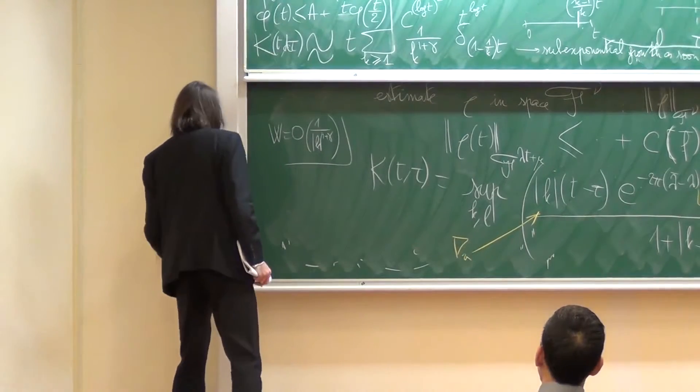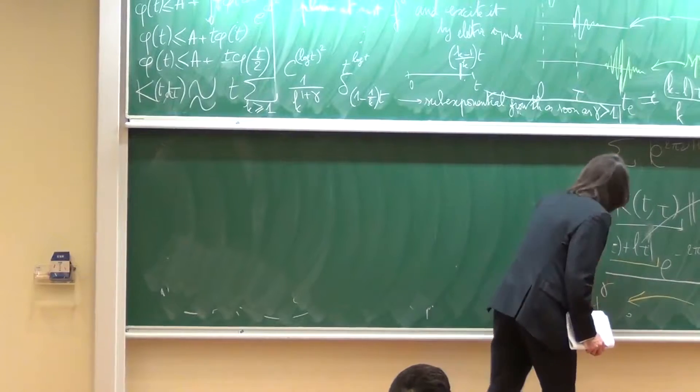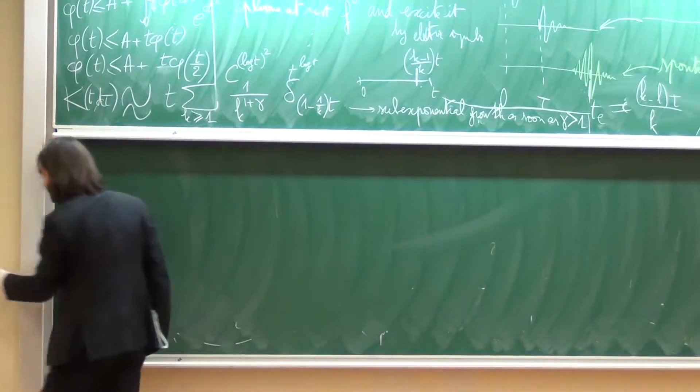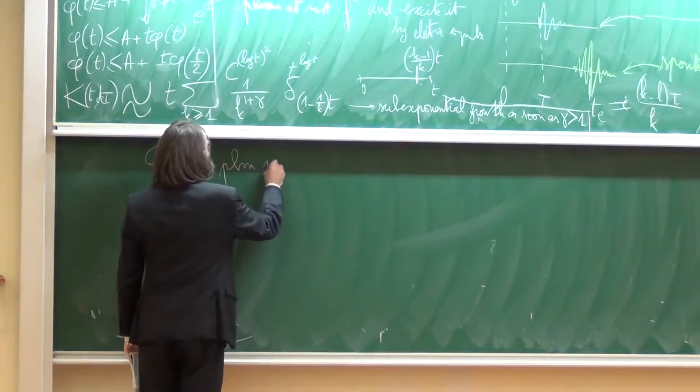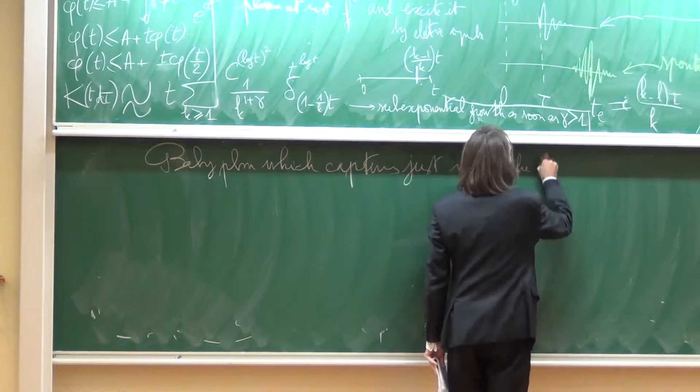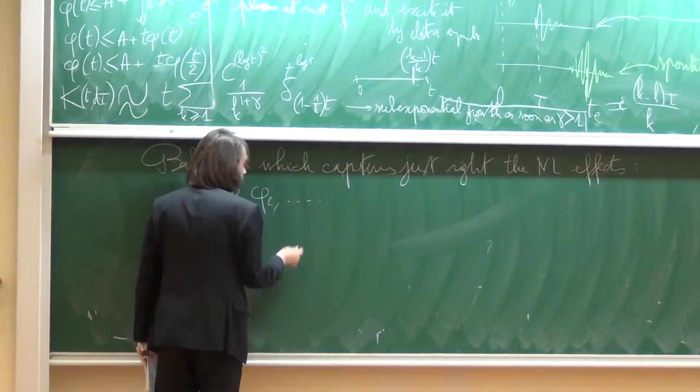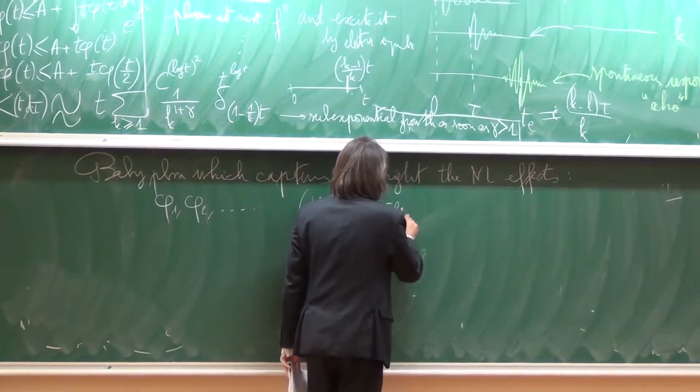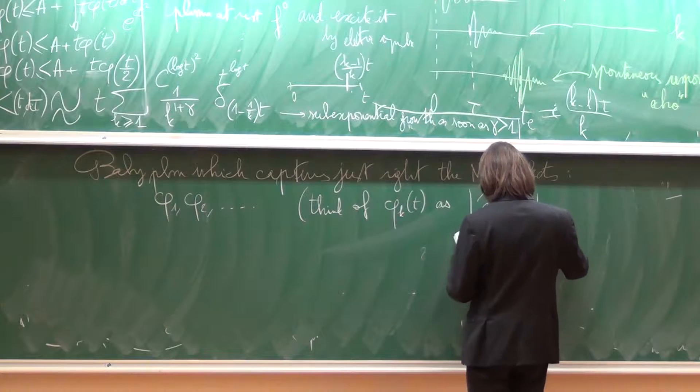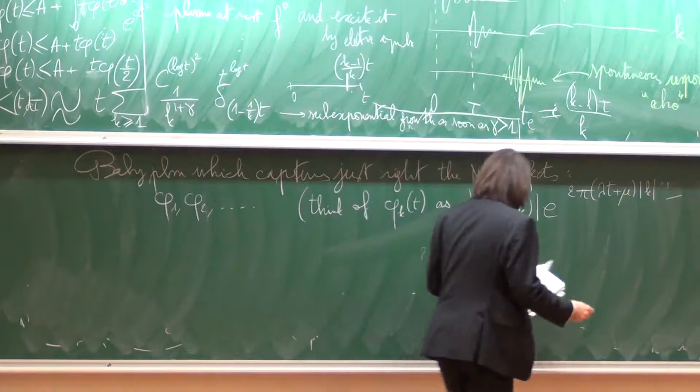And here is the baby problem that gives the right behavior. So baby problem, which captures just like the nonlinear effects. The baby problem would be that I estimate phi 1, phi 2, et cetera. Think of phi k of t as rho hat of k, maybe with some exponential weight, something like lambda t plus mu k.